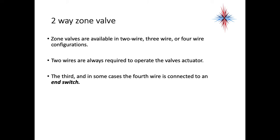Zone valves are available in two-wire, three-wire, or four-wire configurations. You always have to have at least two wires because you have to have a voltage source and a common to operate the valve actuator. The third, and in some cases, the fourth wire is connected to an end switch. All an end switch does is signal that the valve is fully open or closed.